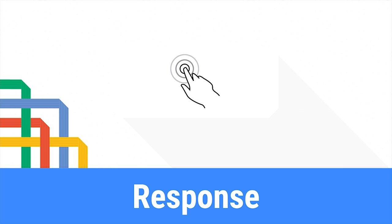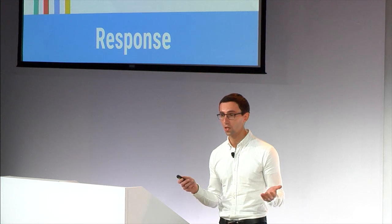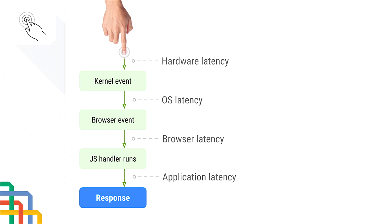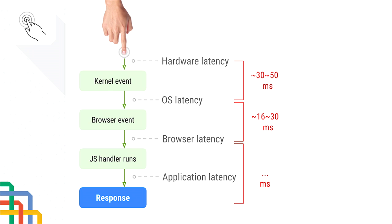Now let's move on to response. Response is a big component of RAIL — we want to respond to all user input within 100 milliseconds. We spent quite a bit of time with the input team figuring out all the different stages of where latency goes. When you tap the glass, the hardware registers that and delivers it to the operating system. The OS dispatches the event to the browser. The browser delivers it to the correct event loop, which dispatches the callback. We found hardware-to-OS latency can be as high as 30 to 50 milliseconds — quite significant.